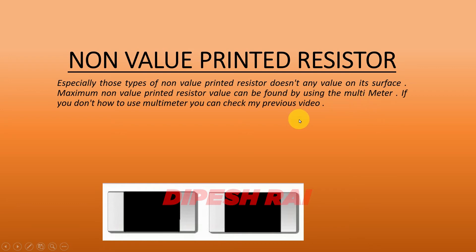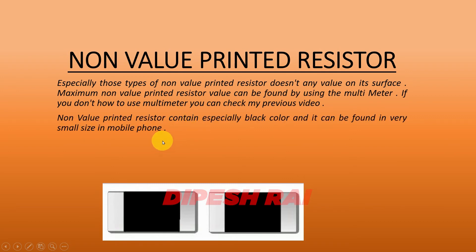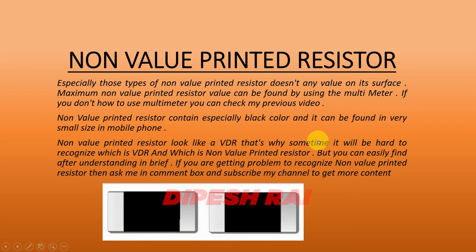The value of non-value printed resistors can be found by using a multimeter. If you don't know how to use the multimeter, you can check my previous video — I have already prepared a video about the multimeter and I'll give you the video link in the description. Non-value printed resistors are especially black in color and can be found in very small sizes. Non-value printed resistors look like a VDR or voltage dependent resistor, so sometimes it will be very hard to recognize which is the VDR and which is the non-value printed resistor. But you can easily find out after understanding them in detail.